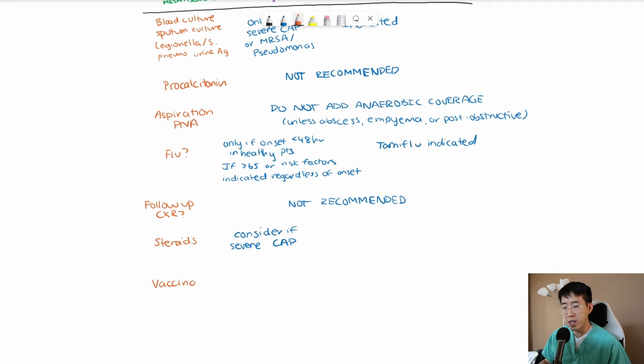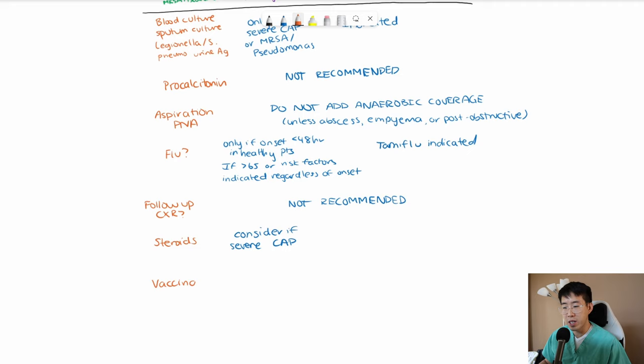Let's talk about a few more things to keep in mind for all patients. Vaccination is incredibly important for reducing the risk of severe pneumonia, especially streptococcal pneumonia. All patients over the age of 65 should get PCV20. This is the pneumococcal vaccine.